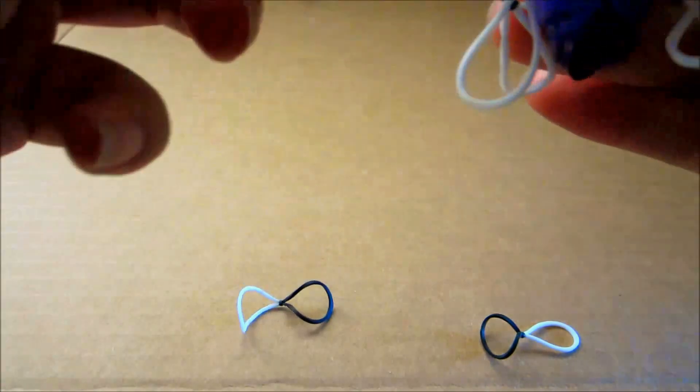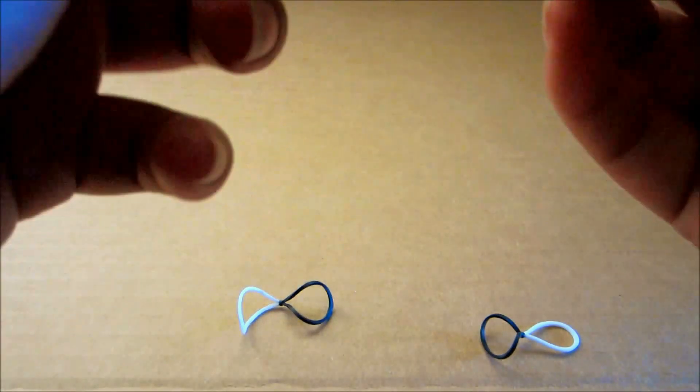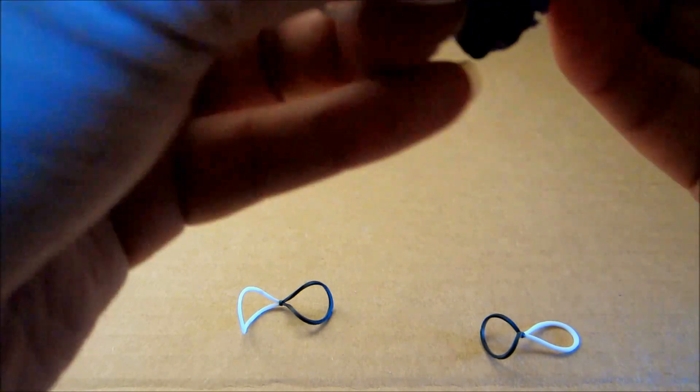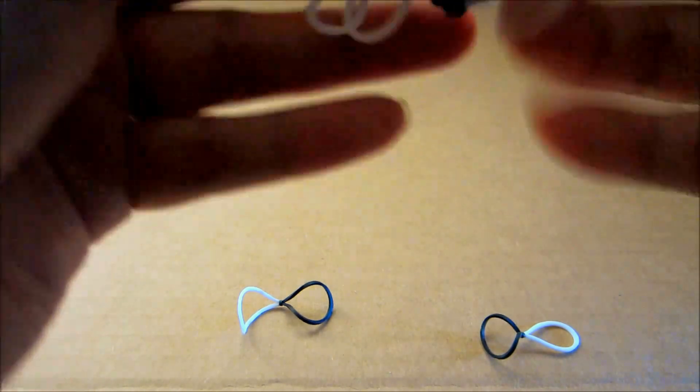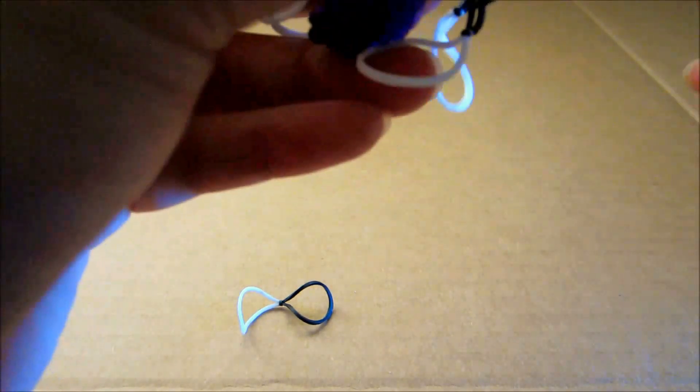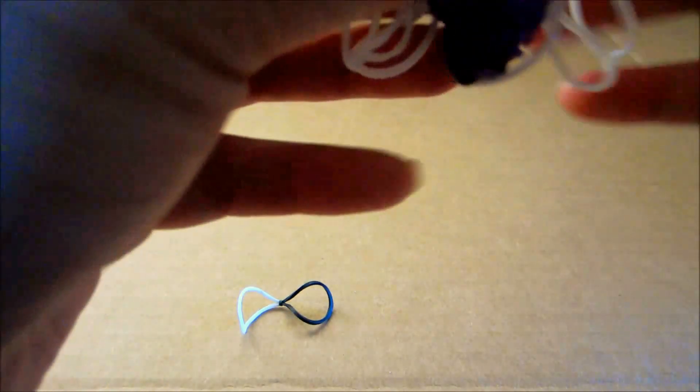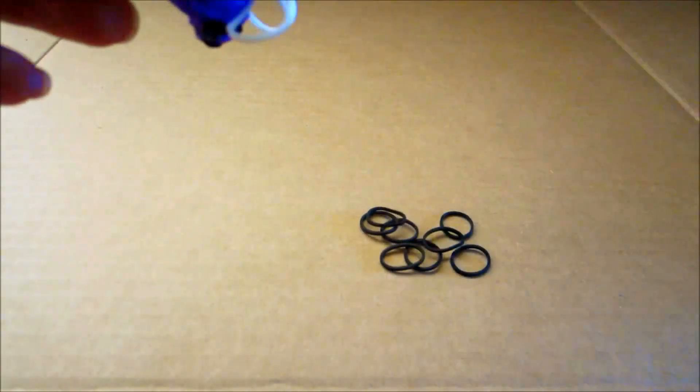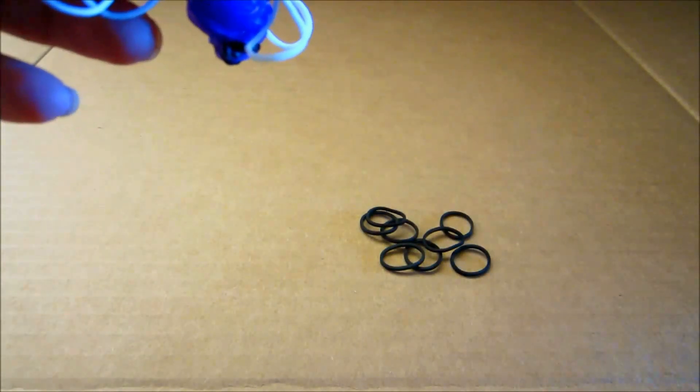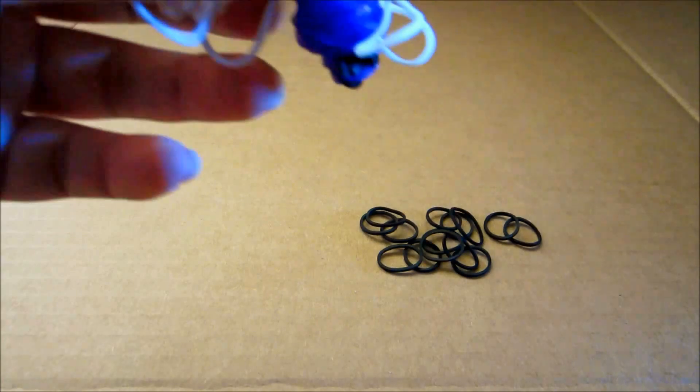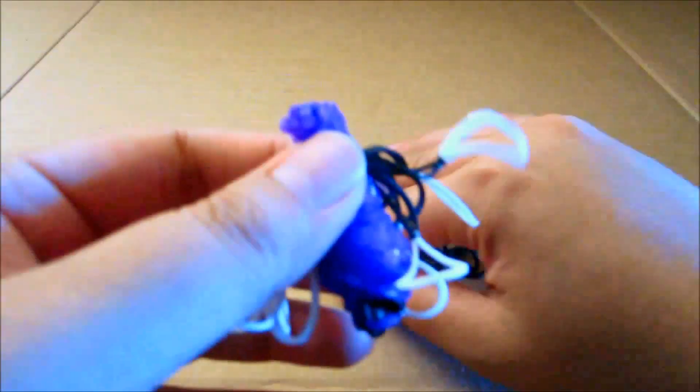We're going to get close to the part that's confusing you guys the most, which is the beading. Beading is like the easiest piece to do. All you're going to need is just to grab some black rubber bands and you're going to be adding them onto the leg.